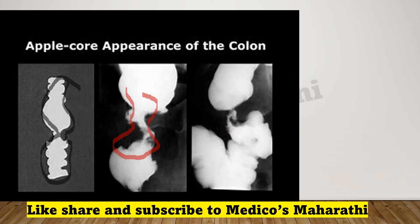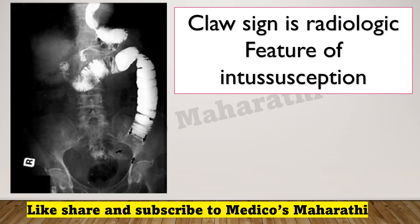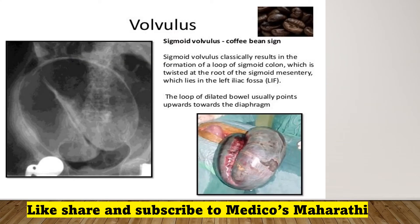Here we have an image of glass sign. Glass sign is a radiologic feature of intussusception. You can see how the glass sign will look — it appears like this. Now the next image is coffee bean sign. Coffee bean sign is seen with sigmoid volvulus.